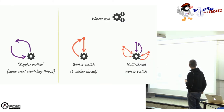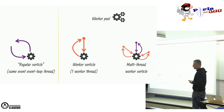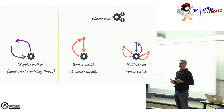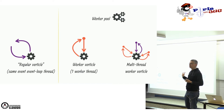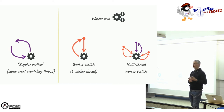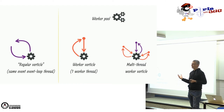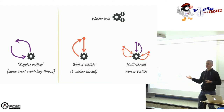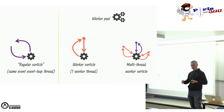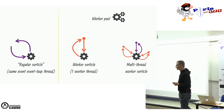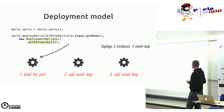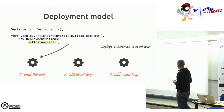On a aussi une notion de Worker Verticle : au lieu de déployer un Verticle sur l'EventLoop, on le déploie sur le WorkerPool. À ce moment-là, le contexte sera associé à un thread du WorkerPool et vous pourrez bloquer.